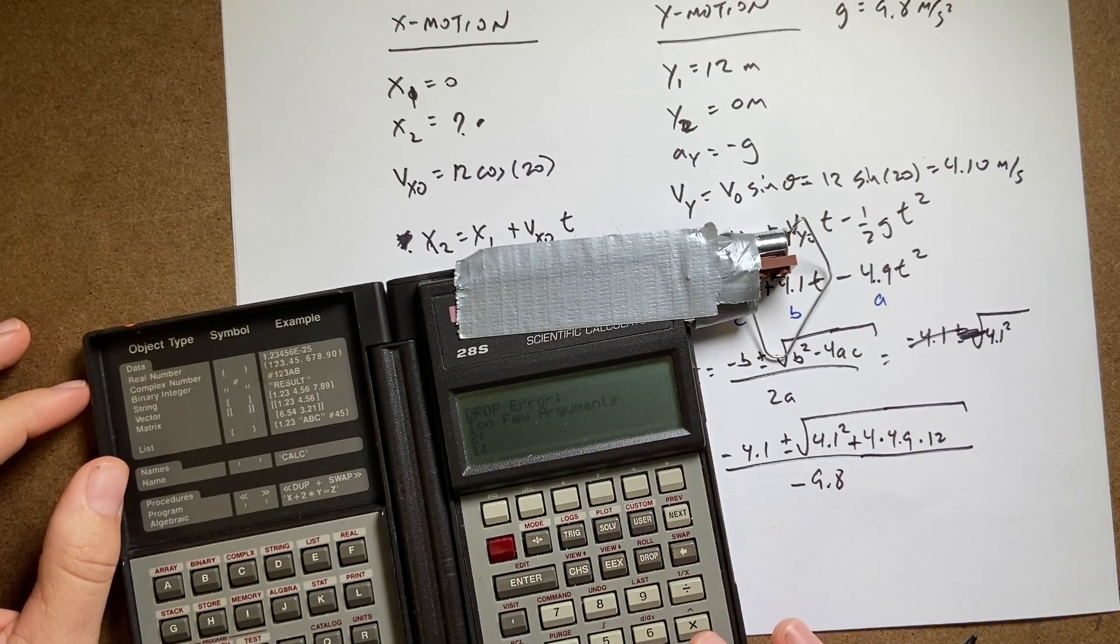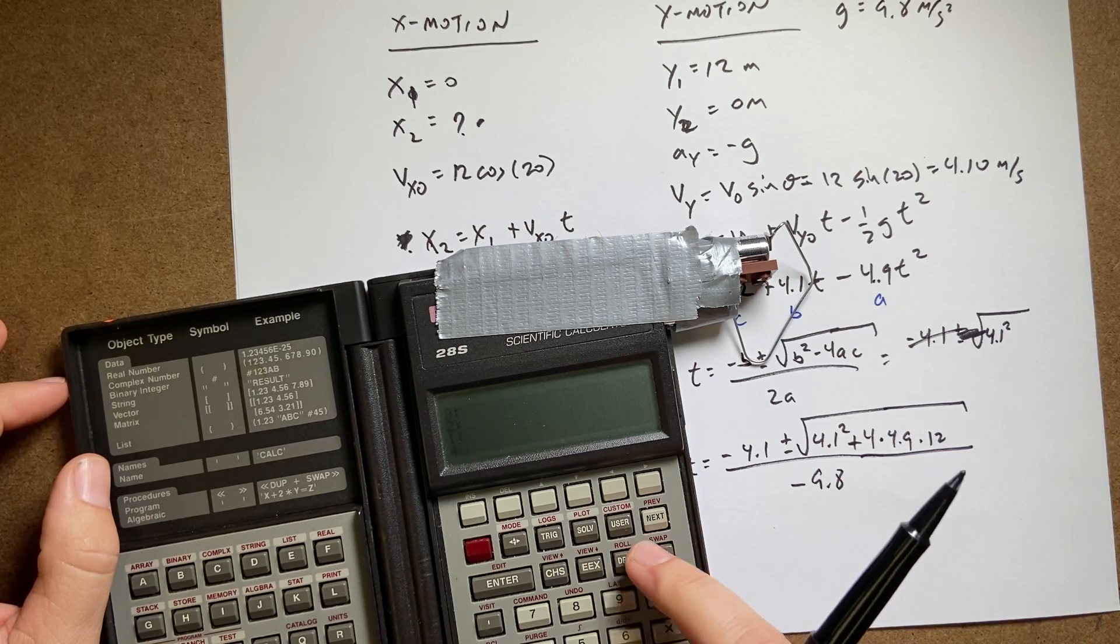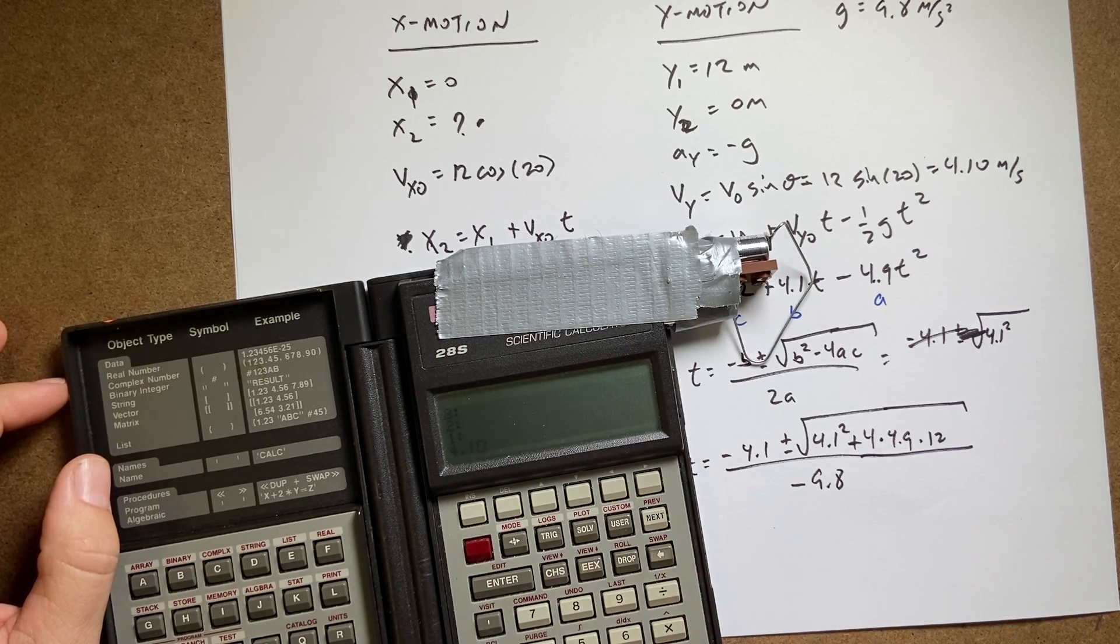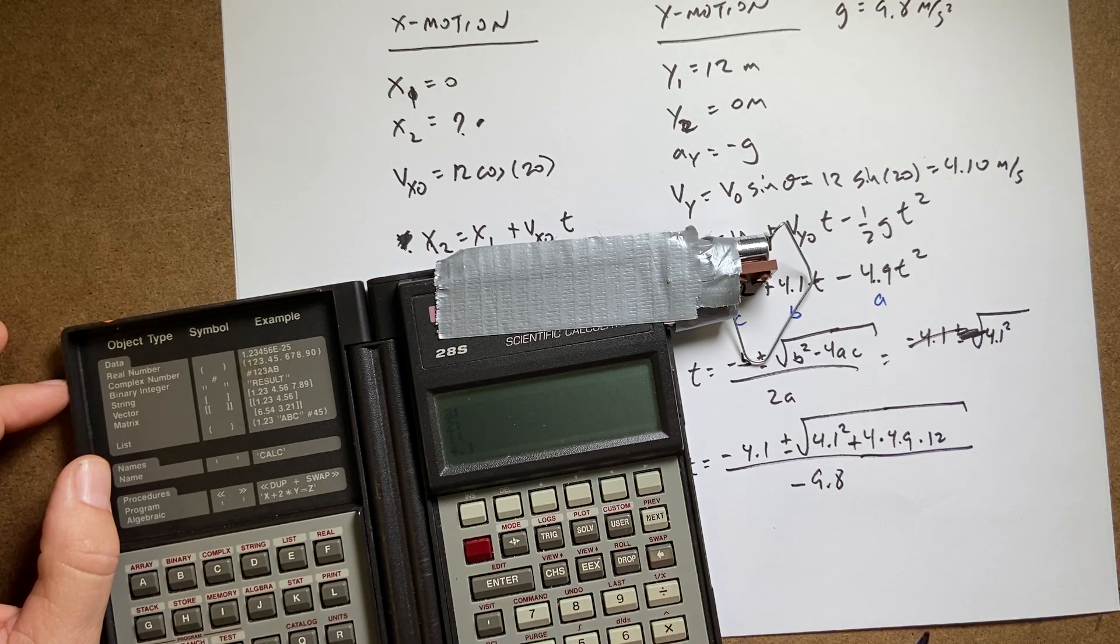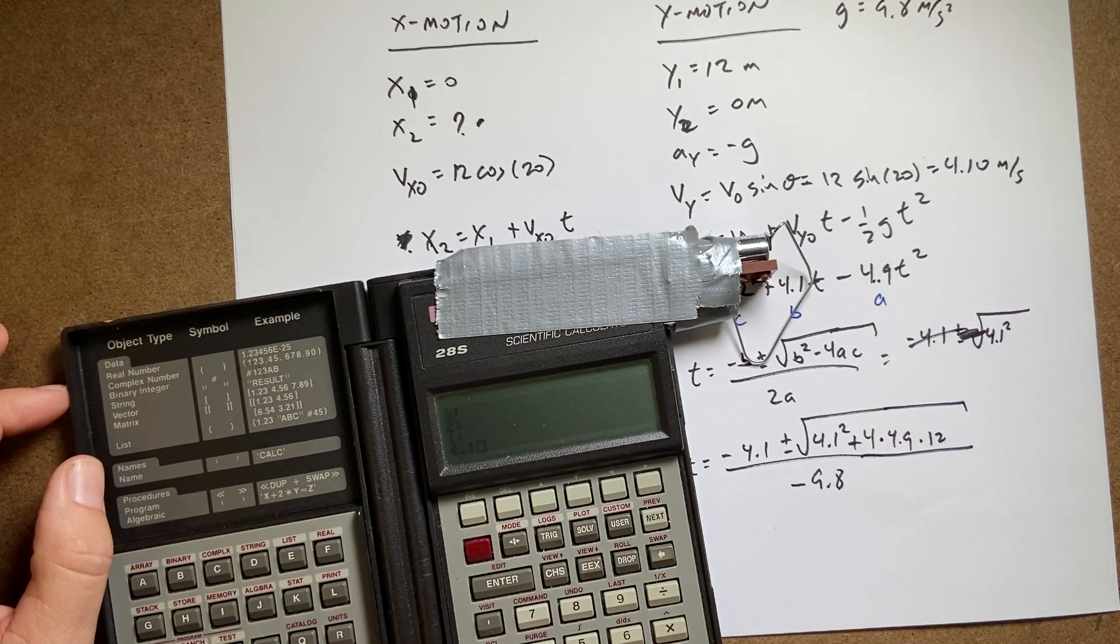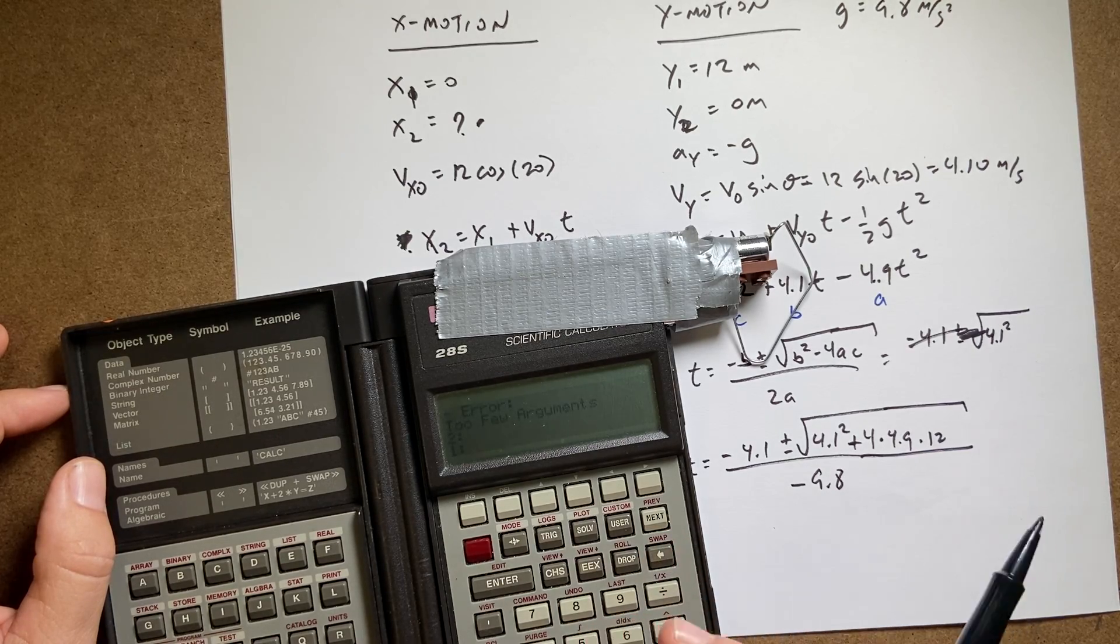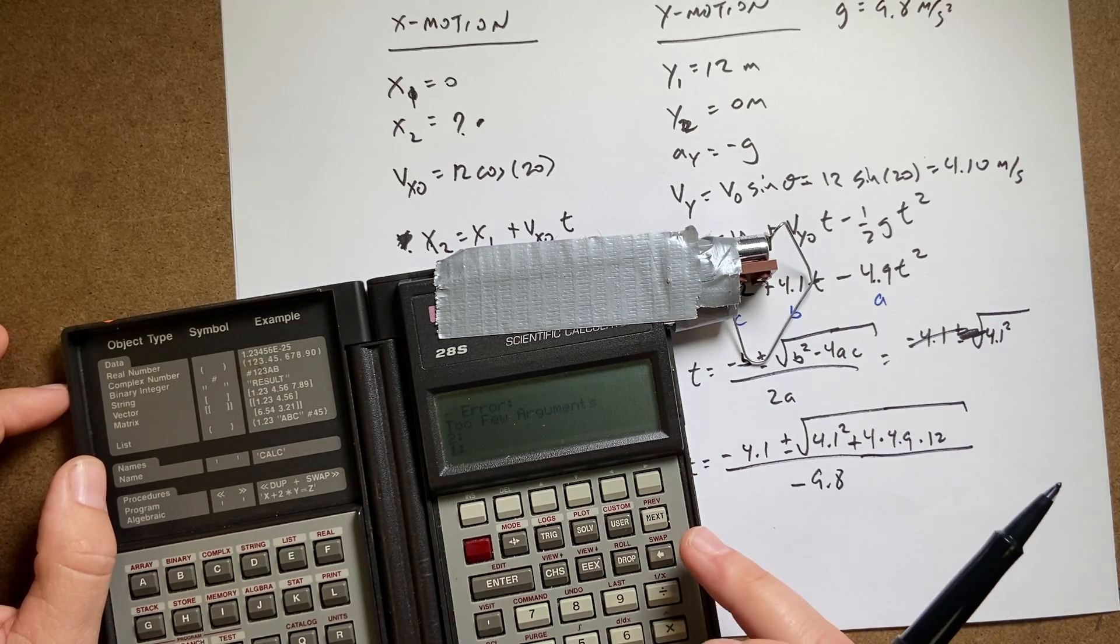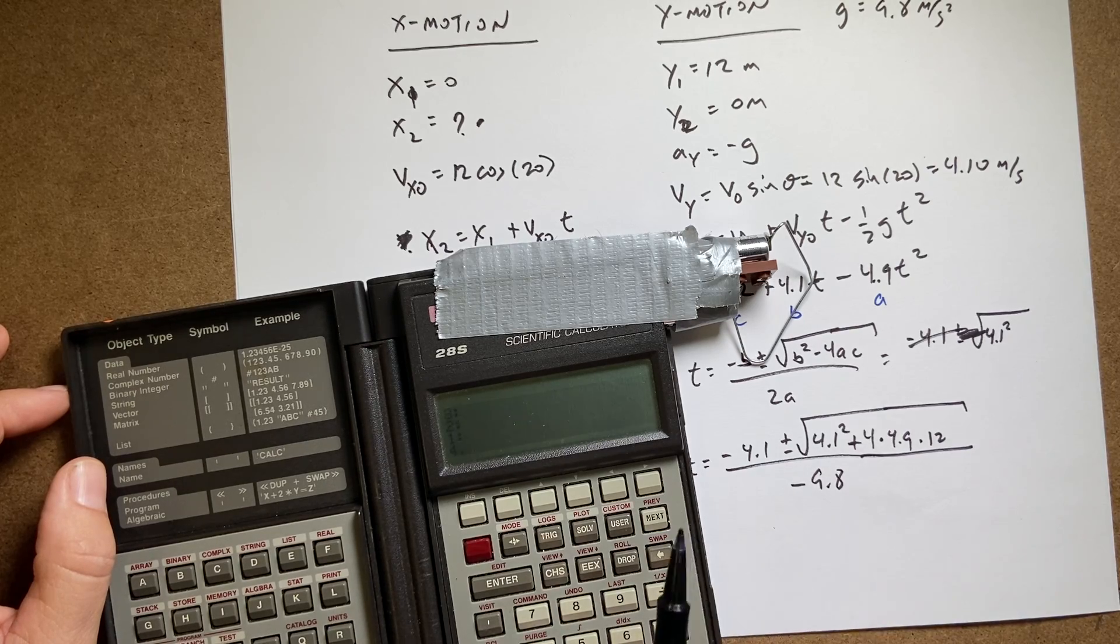My battery moved out. Okay. So I'm going to put in this 4.1. Let's see, what's the negative sign here? I haven't used this in a long time. There's a change sign button. Mode, plot, user, drop, roll, change sign. That's it right there. So 4.1, change sign, enter.